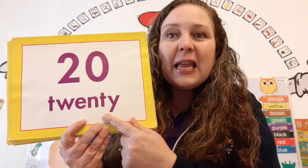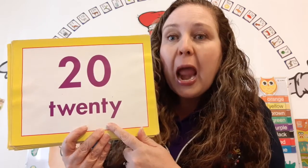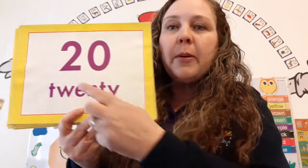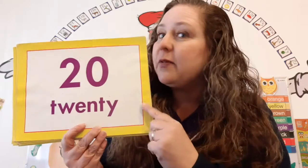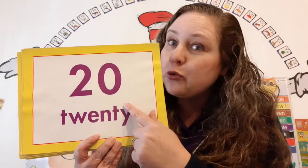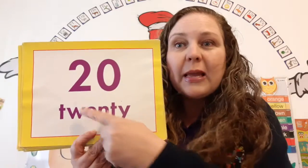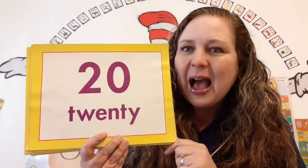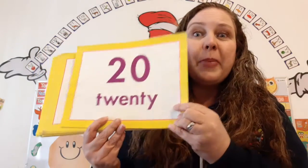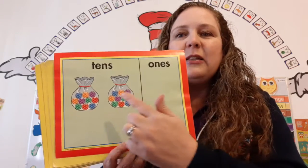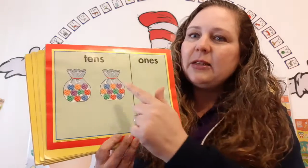Twenty is our new number, and twenty is part of the twenty family. How do we know? Because it begins with a two and ends with a different number. And this is the father of the twenty family — how do we know? It begins with a two and ends with a zero. Let's count by tens: two tens. Ten, twenty. Ten, twenty.